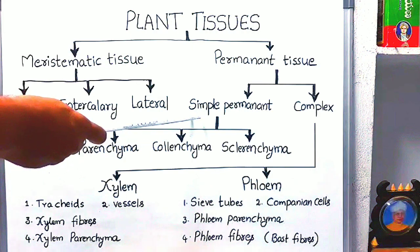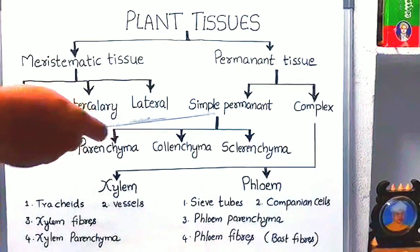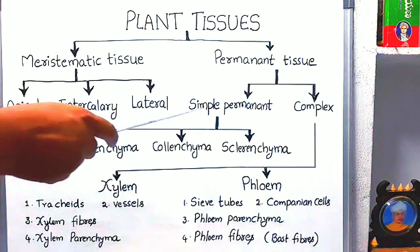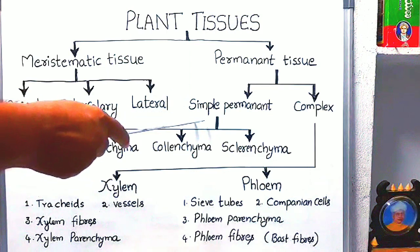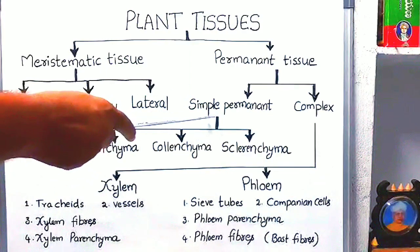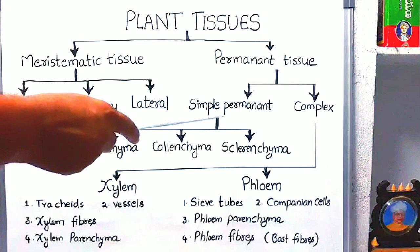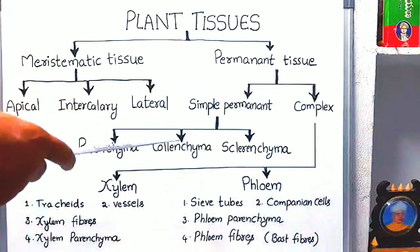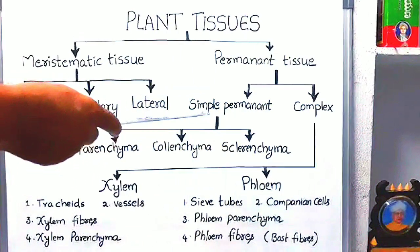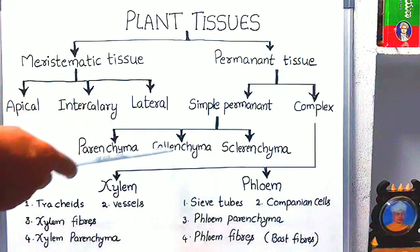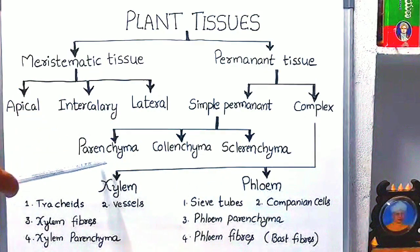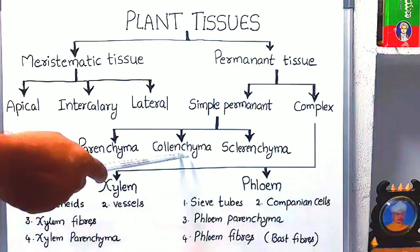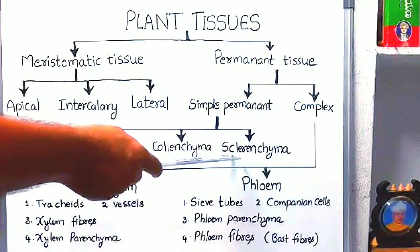Simple permanent tissue means they are made of only one type of cells. This tissue consists of only one type of cells and they perform a single function. Simple permanent tissues are again three types: parenchyma, collenchyma, and sclerenchyma.